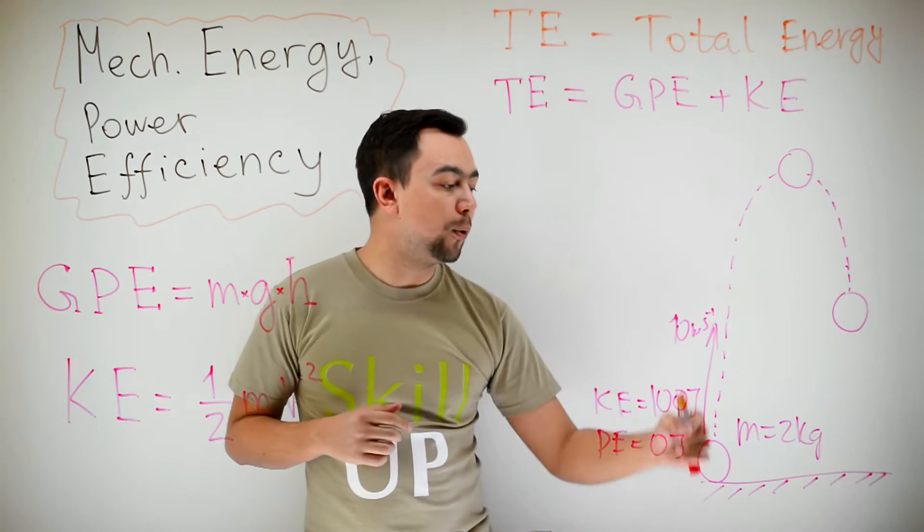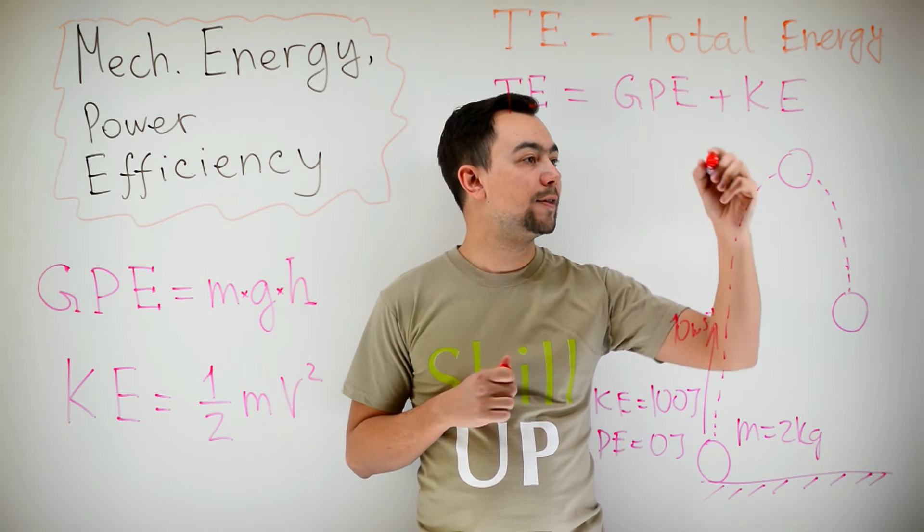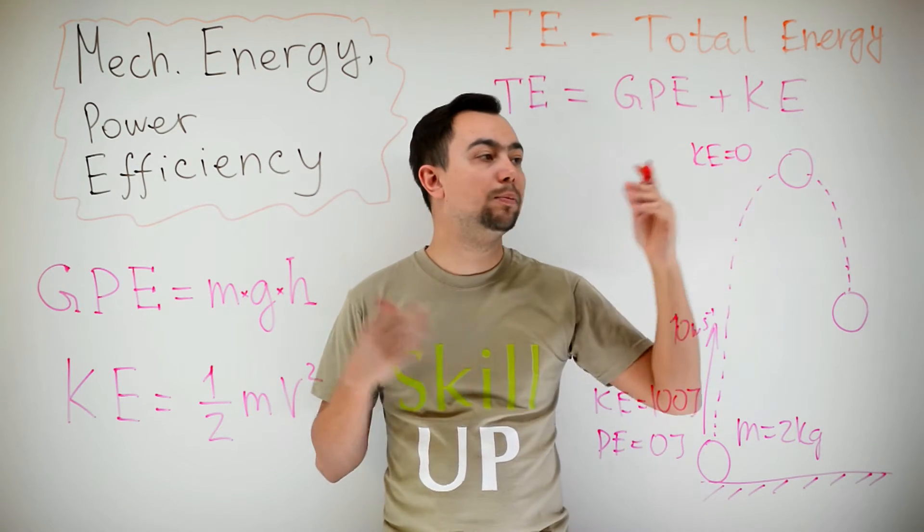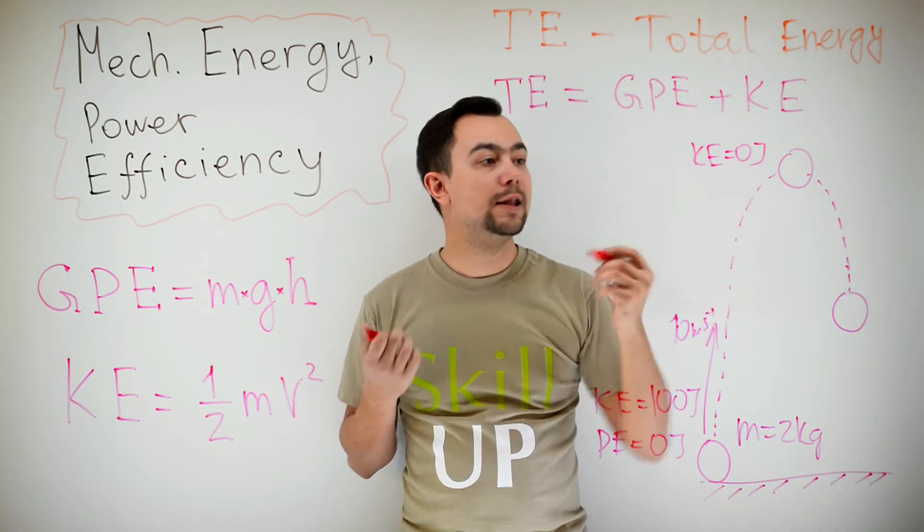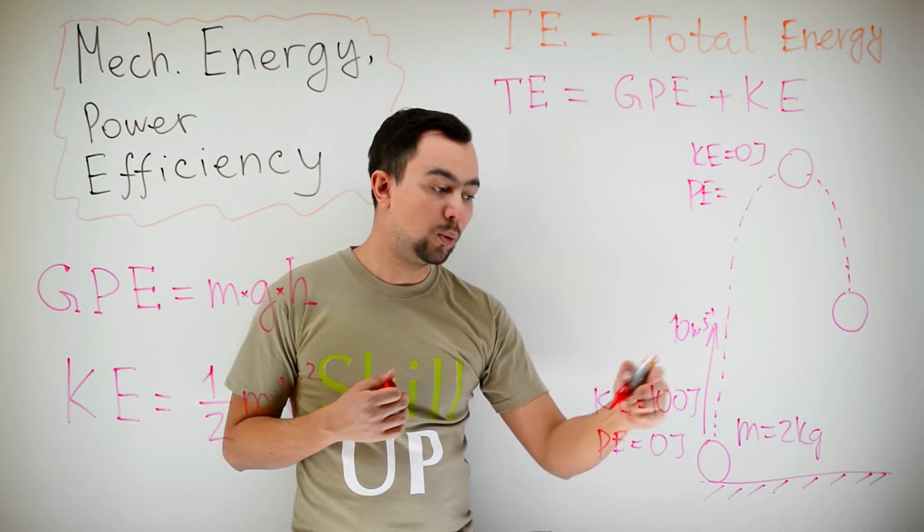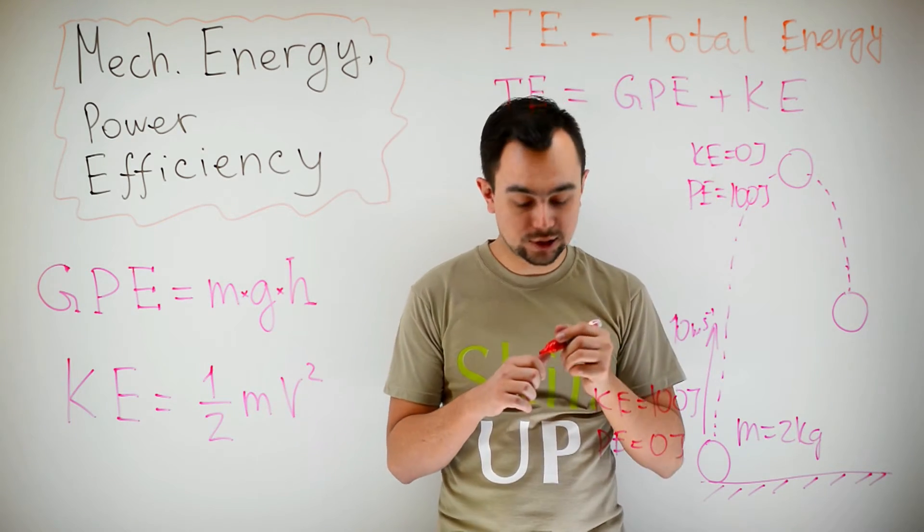When the ball reaches its maximum height, the kinetic energy is 0, because the ball has stopped. The potential energy, on the other hand, is equal to 100 joules, because the total energy remains constant.